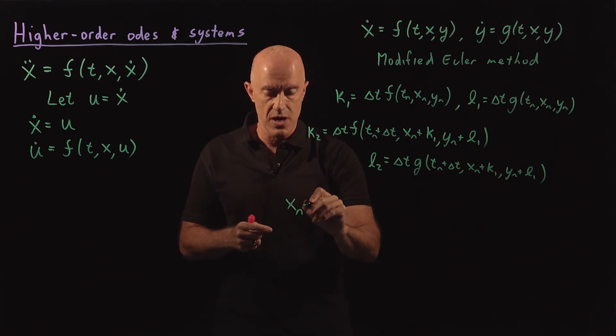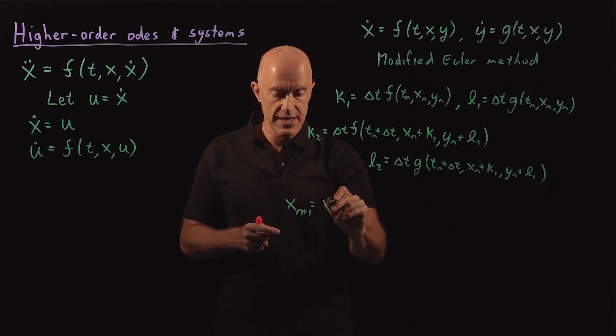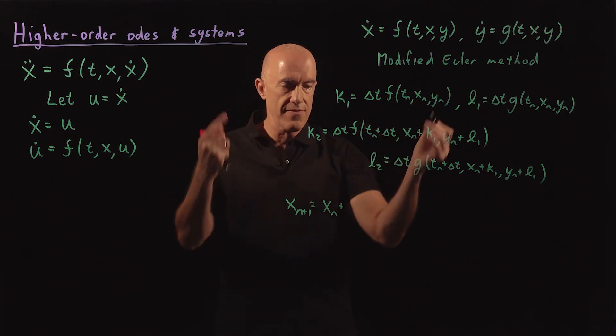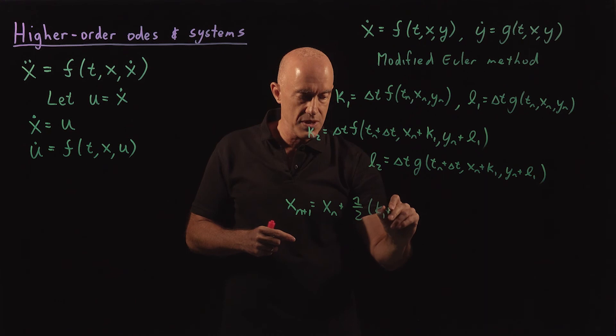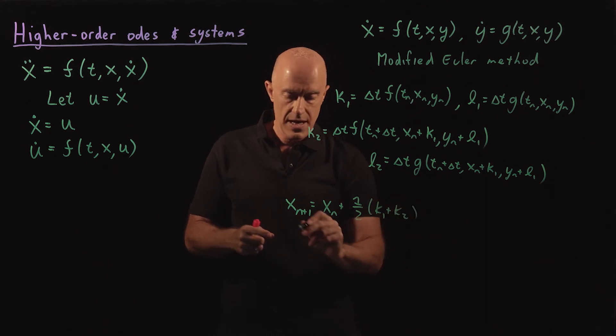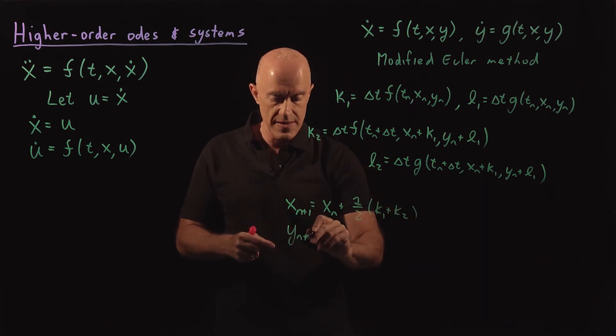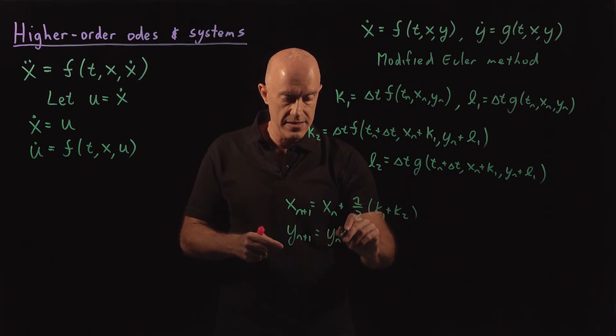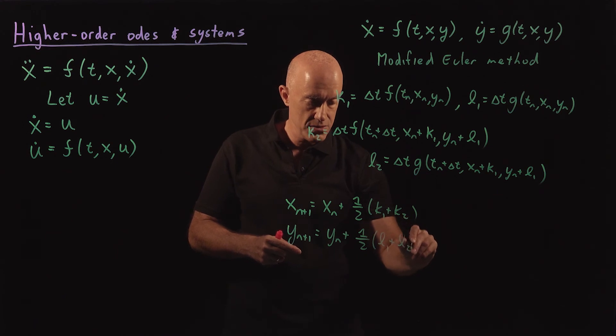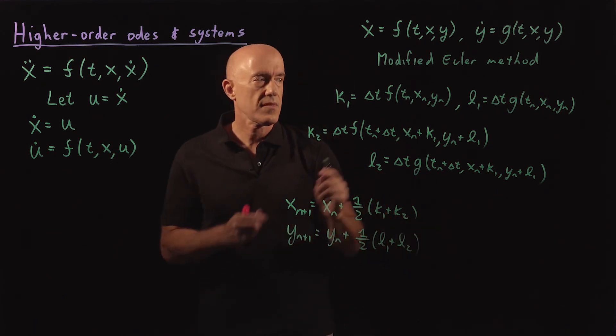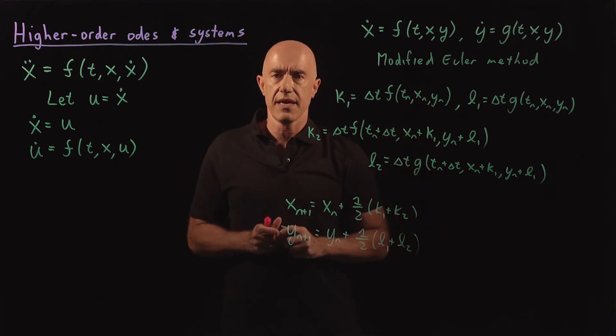So we would have xn plus 1 equals xn, and then we average the Ks, so one half K1 plus K2. And yn plus 1 then is equal to yn plus one half L1 plus L2. Not that complicated.